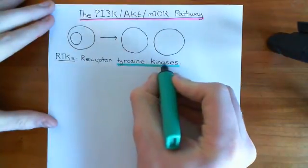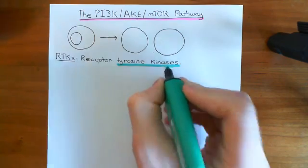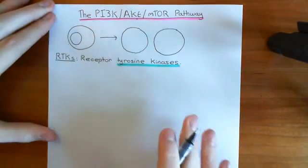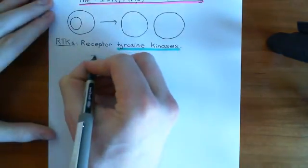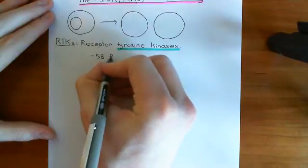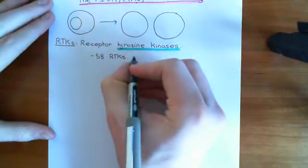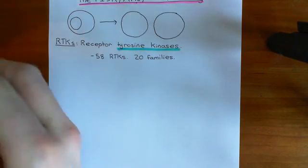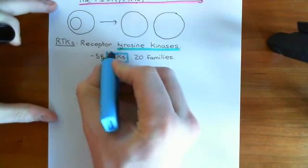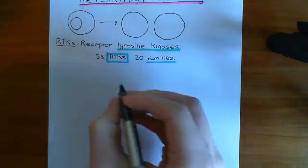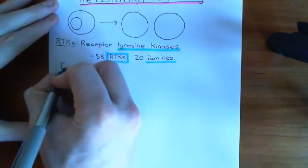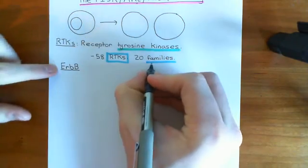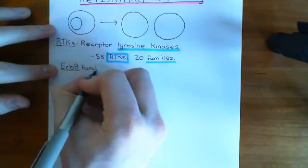Receptor tyrosine kinases are a subset of the enzyme-coupled receptors. These receptor tyrosine kinases are receptors which specifically have a tyrosine kinase enzyme on their cytoplasmic side, and the function of this tyrosine kinase enzyme is activated by the ligand binding. There are other enzyme-coupled receptors, such as receptor serine-threonine kinases. In humans, there are 58 different receptor tyrosine kinases grouped into 20 families. For our purposes, we're going to pick one specific family known as the HerB family, and we're going to demonstrate the whole principle with this family.